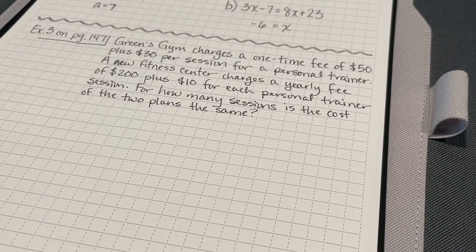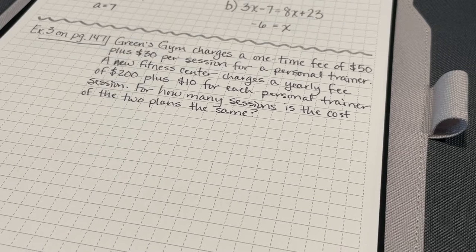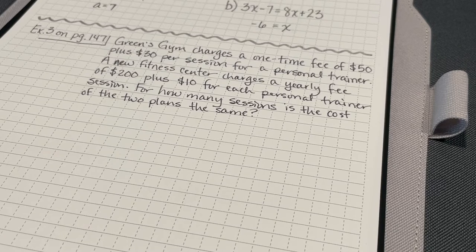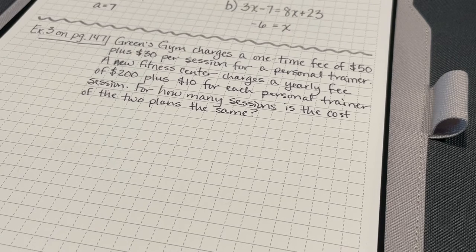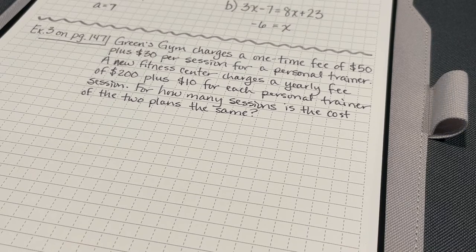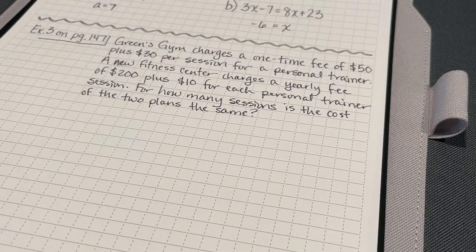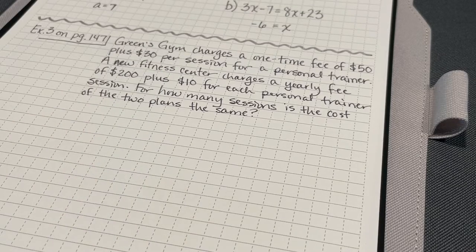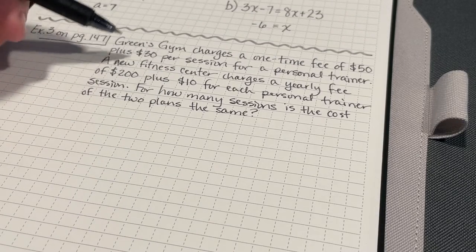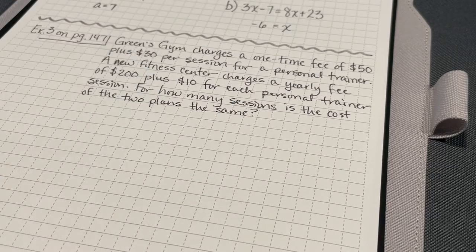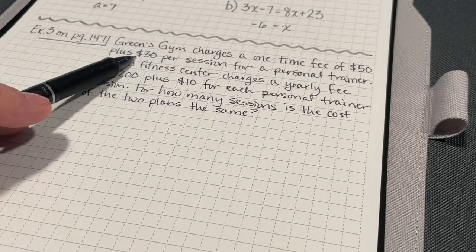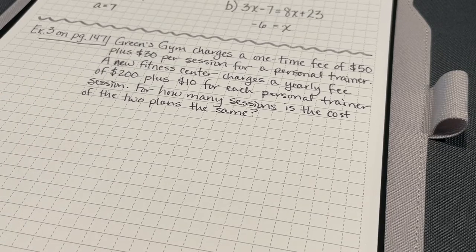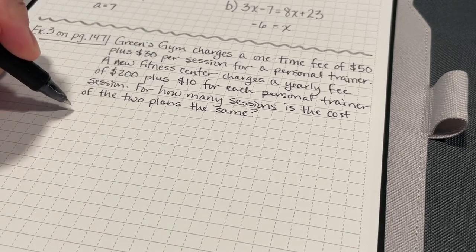In this problem, we're trying to compare the kind of fitness plans, the personal training plans for two different gyms. So, what we're going to do is, we're going to create one side of our equation is going to be representing this Green's Gym, and the other side of the equation is going to represent this new fitness center. Alright. So, with Green's Gym, I know that they charge $50 for a one-time processing fee plus $30 per session.